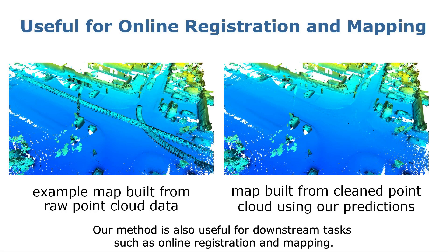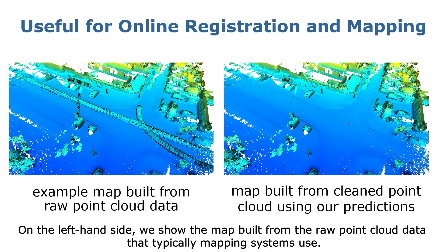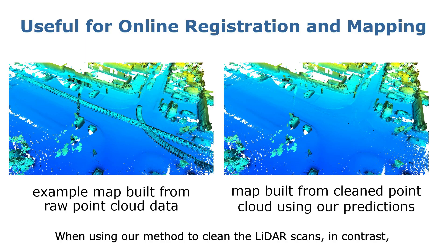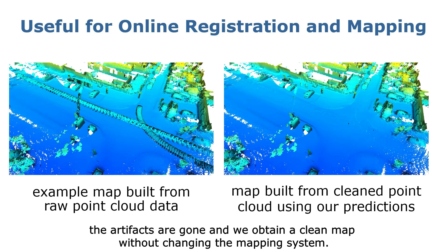Our method is also used for downstream tasks such as online registration and mapping. On the left-hand side, we show a map built from the raw point cloud data that typical mapping systems use. As can be seen, there are so-called ghost artifacts caused by the moving objects. When using our method to clean the LiDAR scan, in contrast, the artifacts are gone, and we obtain a clean map without changing the mapping system.